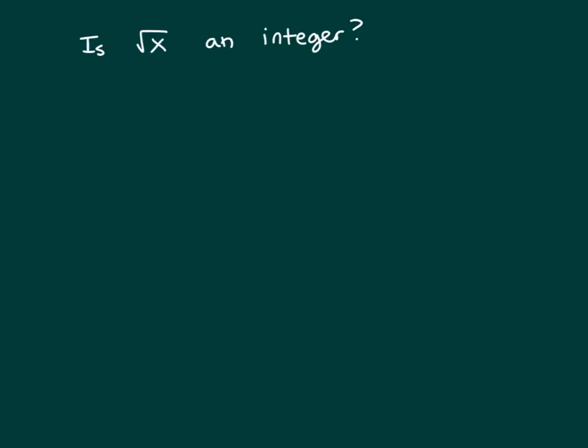Is square root of x an integer? Let's look at clue 1. Clue 1 says x equals n to the 4th, and it says n is an integer.